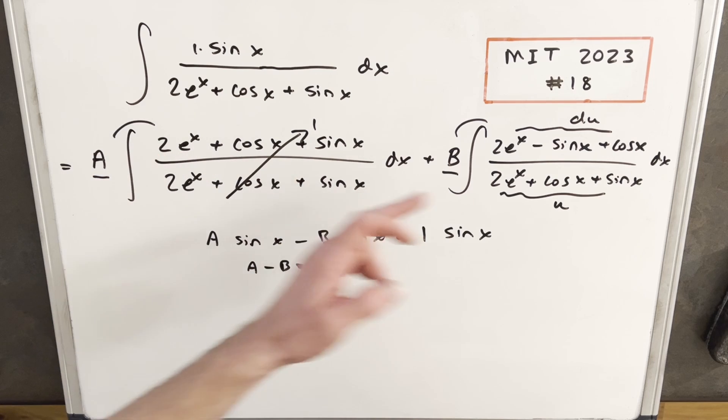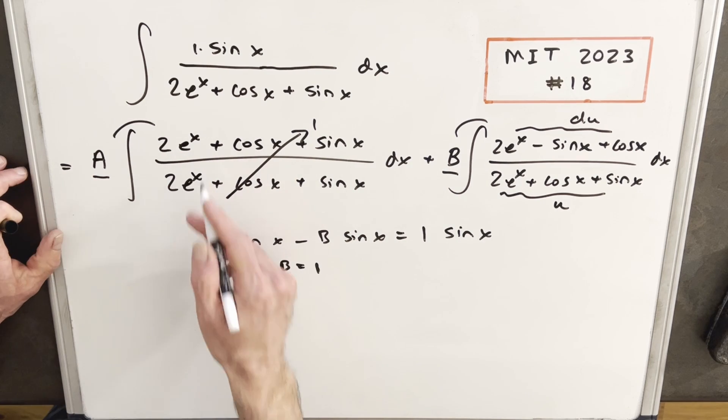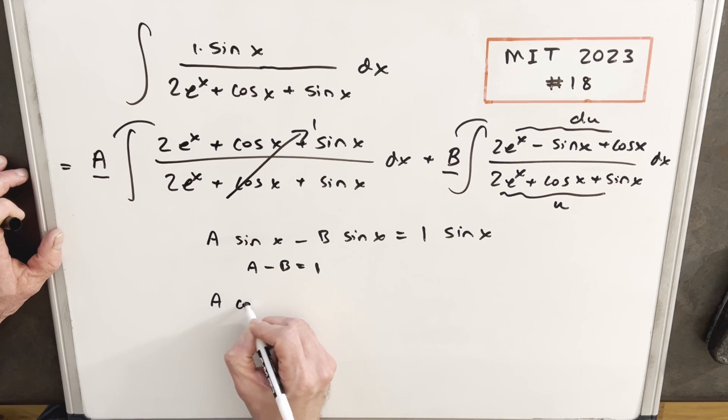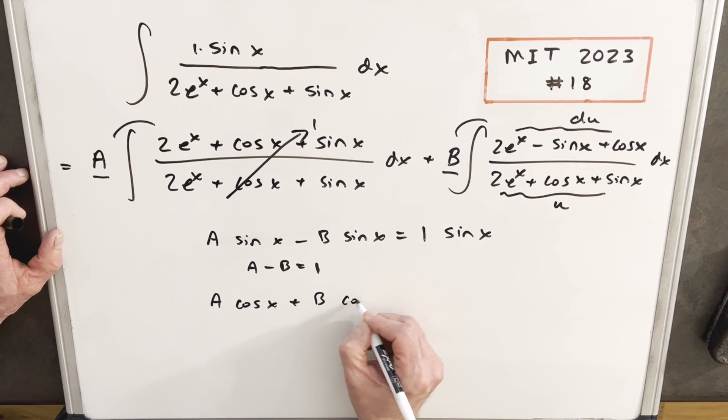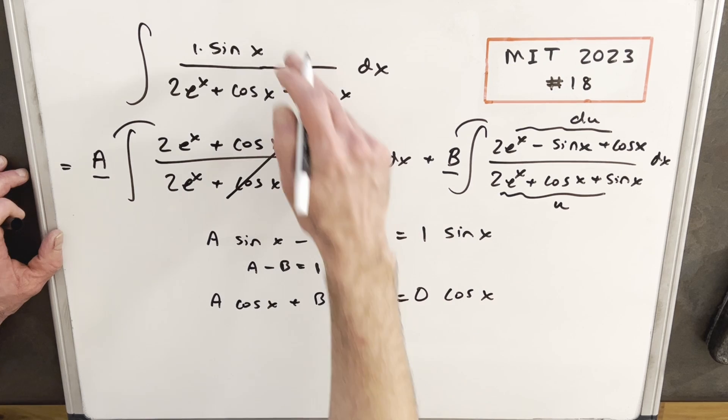And then next, we could choose the e, or we could choose the cosine. I'm going to use the cosine, so we'll do the same thing here for cosine. So we're saying a cosine x plus b cosine x equals 0 cosine x, because we've got no cosine here.